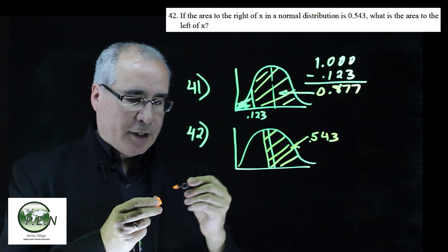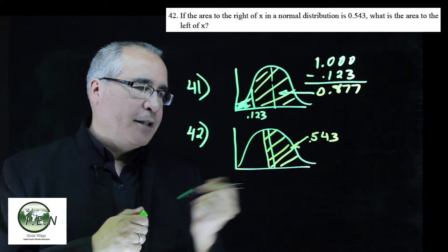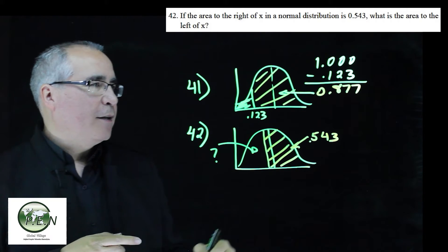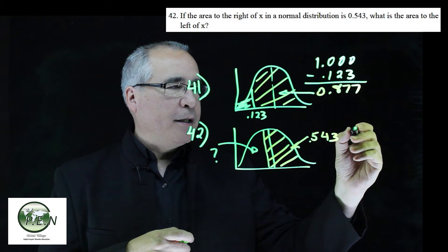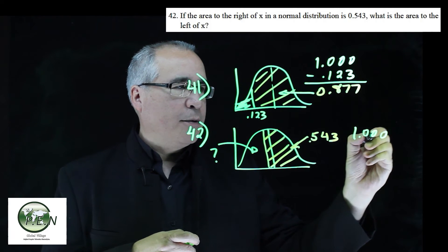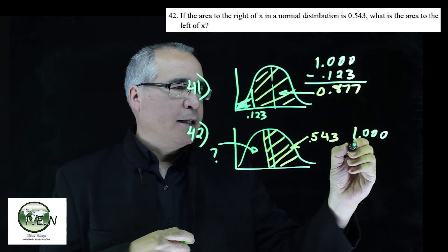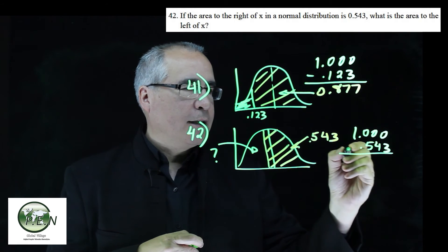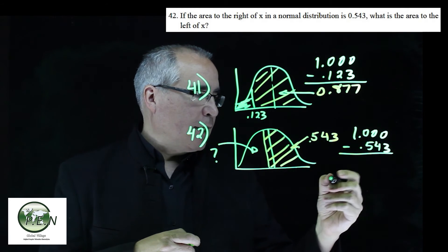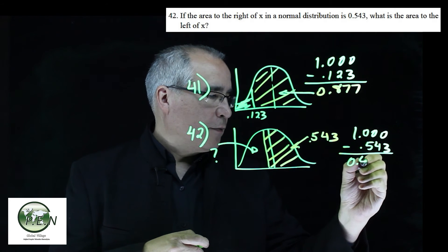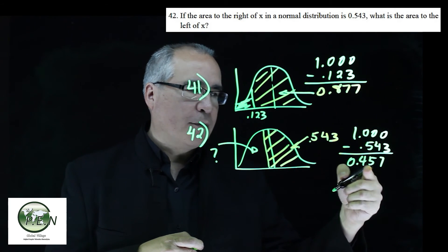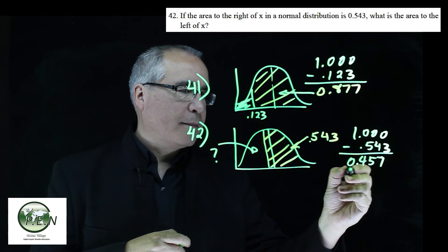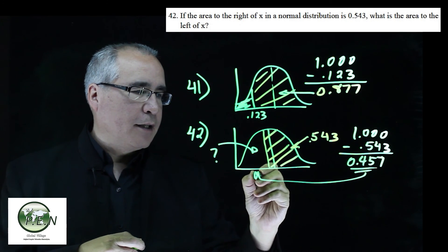And the question is, what's the area below? So again, we use our complement. We take the whole thing, which is 1, subtract off the 0.543, and what we get is 0.457, or 45.7%. It's the area that's below.